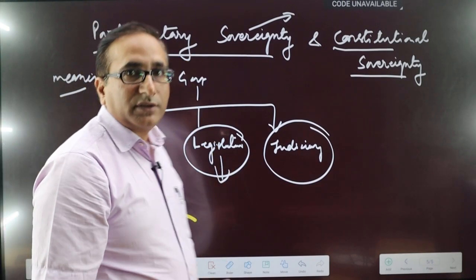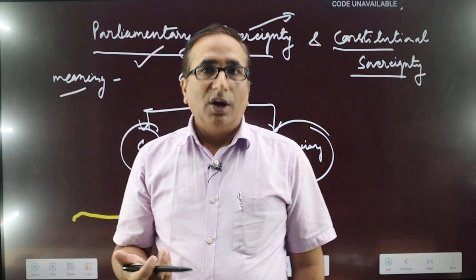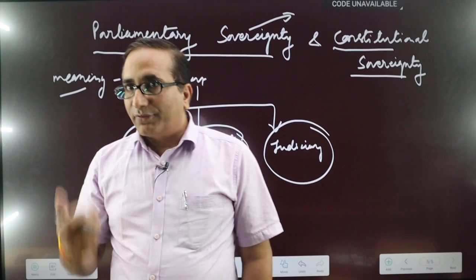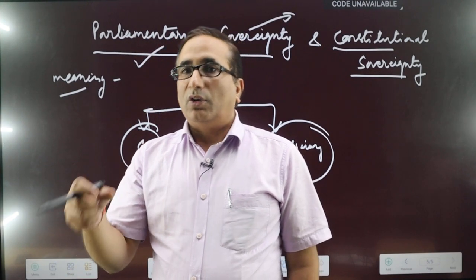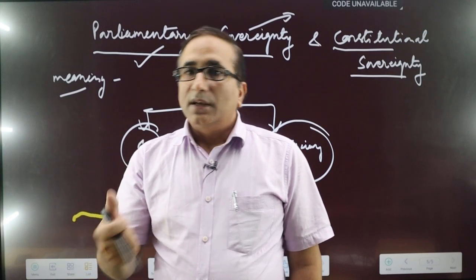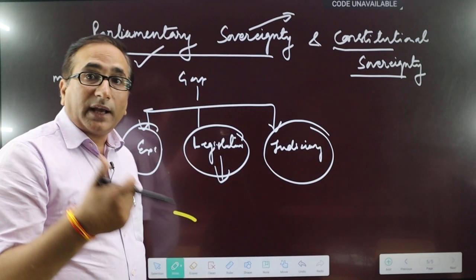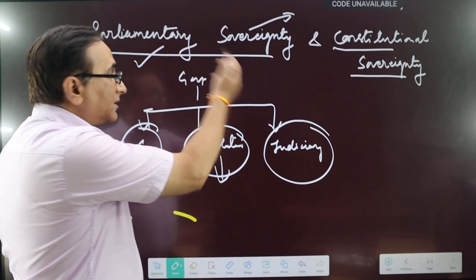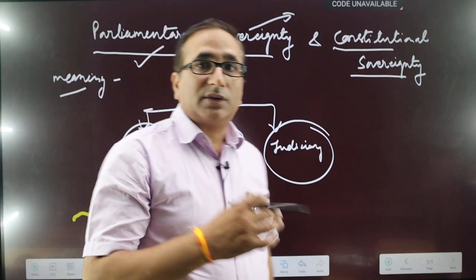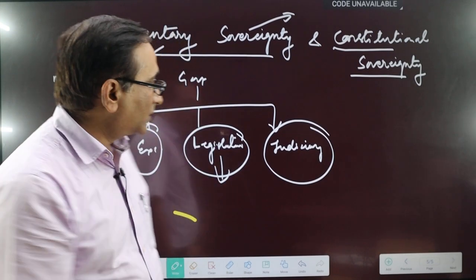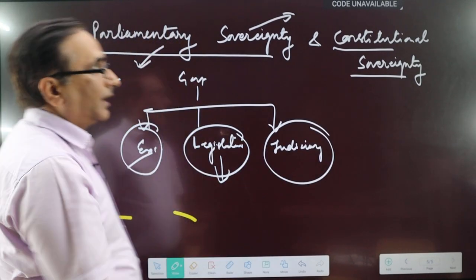Parliamentary sovereignty refers to the power of parliament to make any kind of law, or it refers to the supremacy of parliament over the two other organs of government — judiciary and executive. So if in any country parliament is supreme, or parliament has the right to make any kind of law or has the right to control judiciary and executive, then it is known as parliamentary sovereignty.